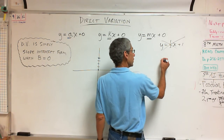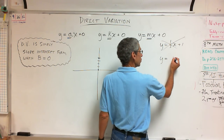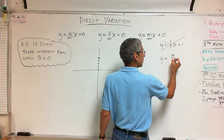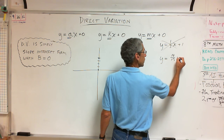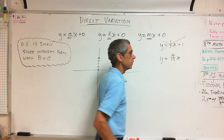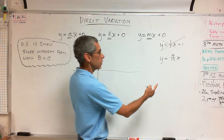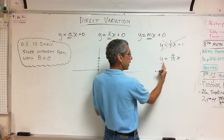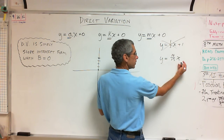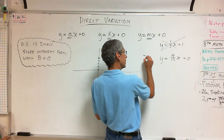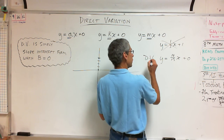What about this one? Y is equal to 14 fifteenths x. Is that direct variation? Yes. That's my M — y equals MX plus zero. So yes, that is an example of direct variation.